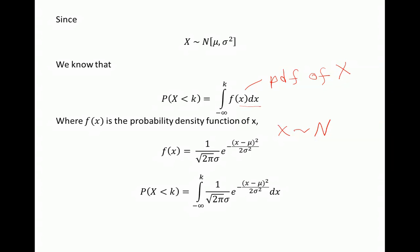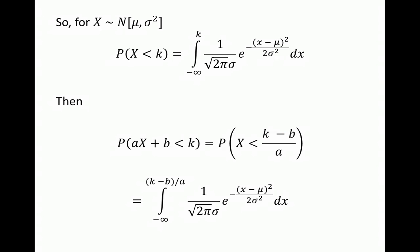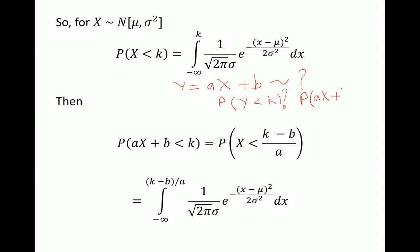So the probability that X is less than some number K is the integral from negative infinity to K of f(X) dX. Now we need to find the probability function for the new variable Y equals aX plus B. We want to find, in general, the probability that Y is less than K, and we know that can be expressed as the probability of a times X plus B less than K.